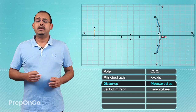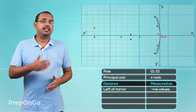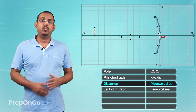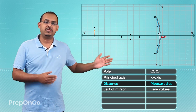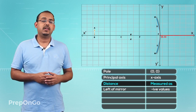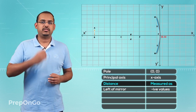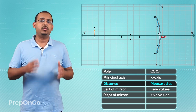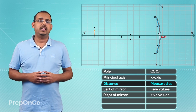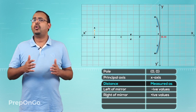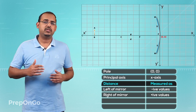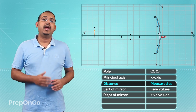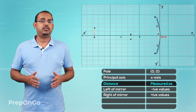Similarly, all the distances measured to the right side of the mirror, which are in the direction of the positive x axis, are always considered as positive values. Another thing to note here is that all horizontal distances that are measured are always measured from the y axis and not the surface of the mirror.